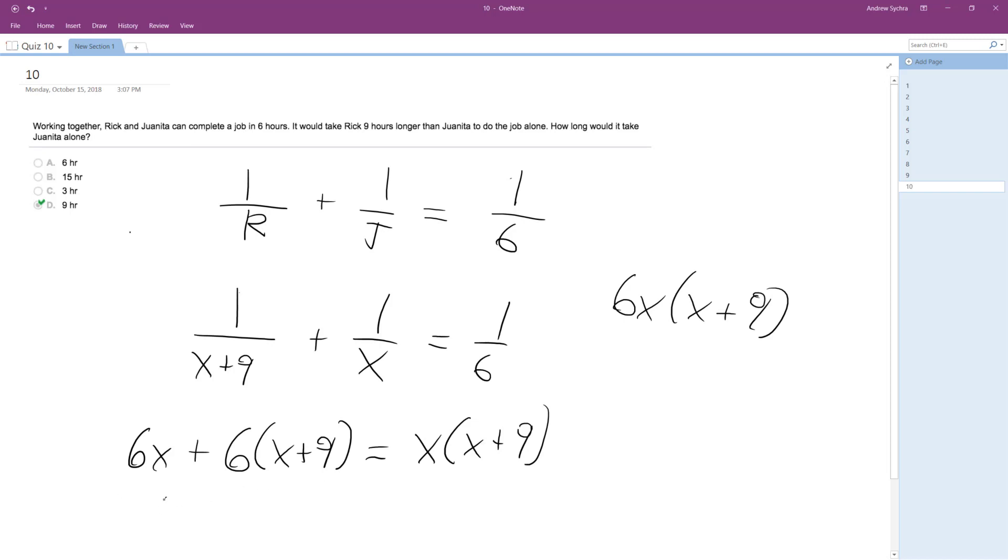All right, so combining terms, we get 12X plus 54 equals X squared plus 9X.